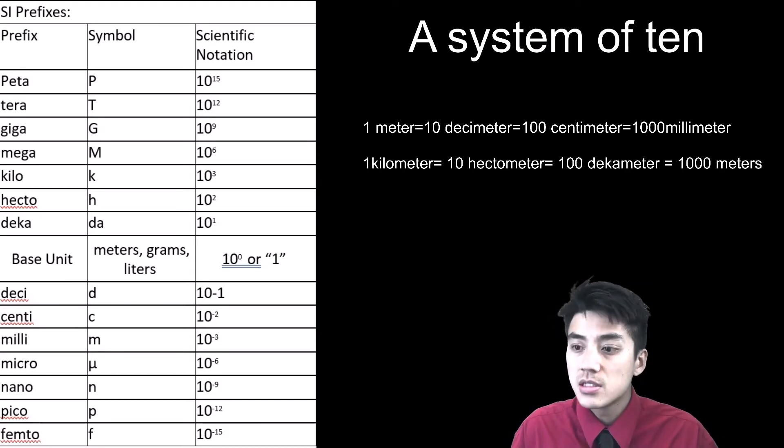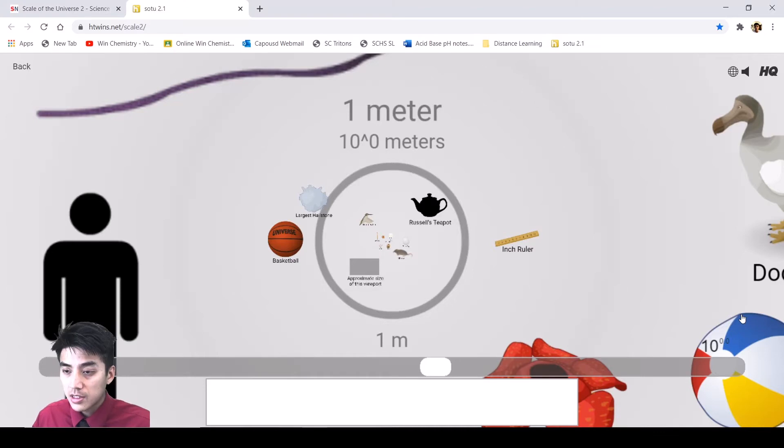This tool is called Scale of the Universe, and basically what it allows you to do is you can zoom in and zoom out, and you can compare the relative sizes of different units in the metric system. So the most important thing to keep track of is the numbers that are in the lower right of your screen. So right now, this thing is at 10 to the zero of power. 10 to the zero is 1. So these are all things that are in the realm or the neighborhood or the magnitude of 1 meter. For example, yourself, human beings, we're about 1.7 meters tall. A basketball, a dodo bird, a beach ball, these are things that are relative to 1 meter, which is the base unit of length or distance in the metric system.